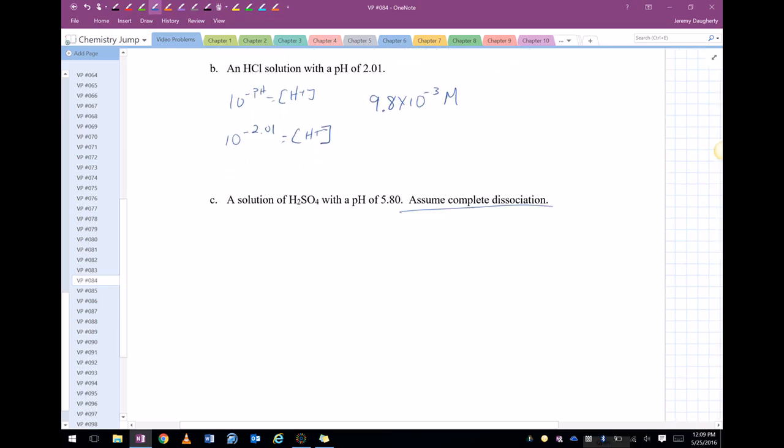H2SO4, assume complete dissociation. What that means is that we are assuming when this guy breaks up, it breaks up like this. It breaks up with two hydrogen ions.